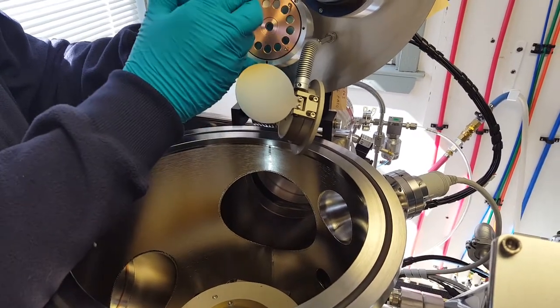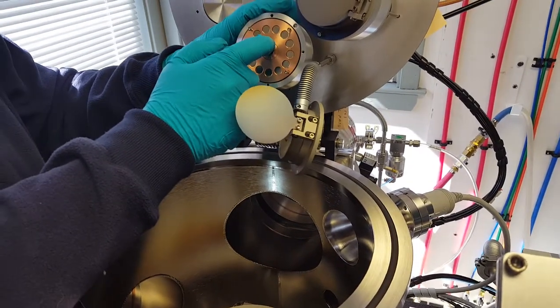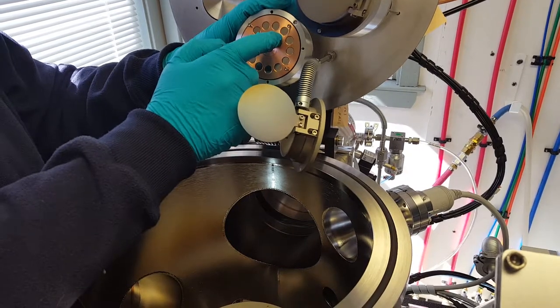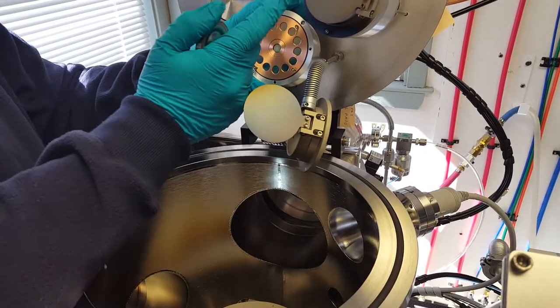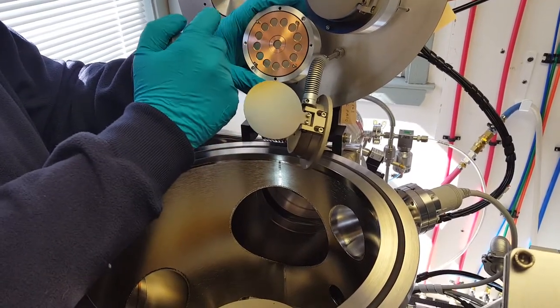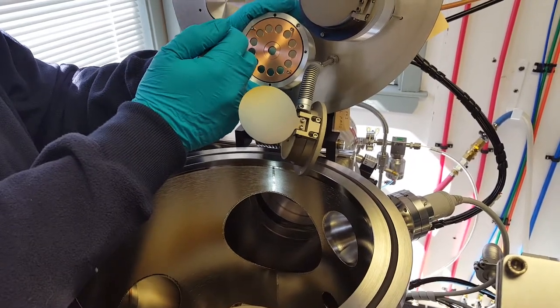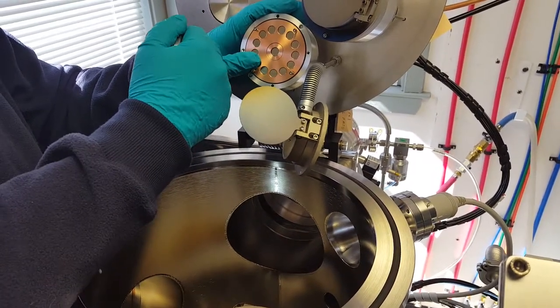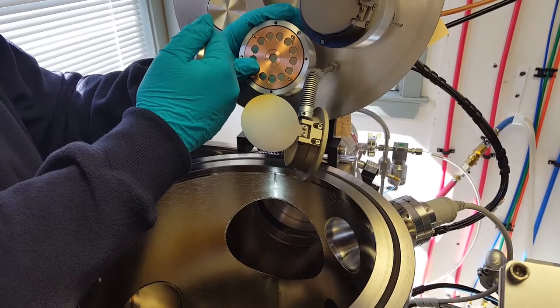So when you apply DC or RF here, you know, those electrons that are coming off the cathode, now bump into the argon gas and ionize it, knock an electron off the argon gas.